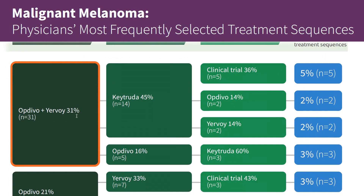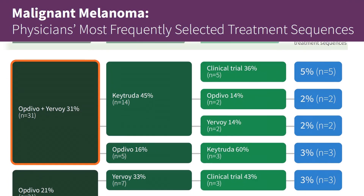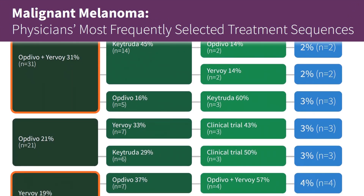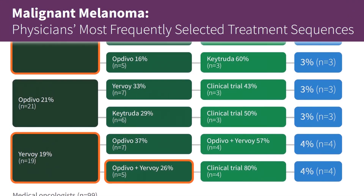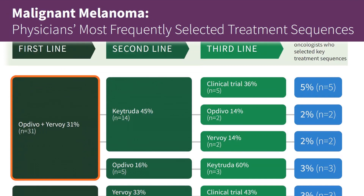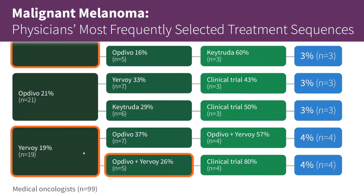But OPDIVO and Yervoy is most frequently prescribed as a second line therapy following Yervoy in slowly progressing patients. So using this data, the pharma strategist was able to understand the position and competitive threats of the PD-1 and CTLA-4 inhibitor and plan future R&D efforts.